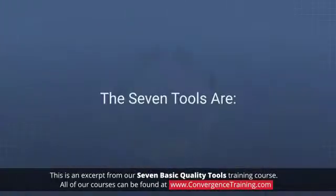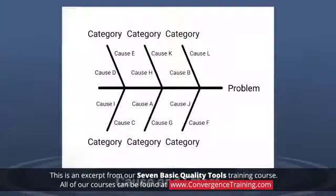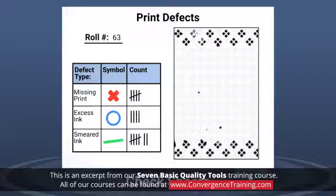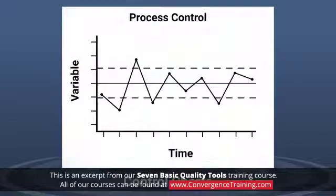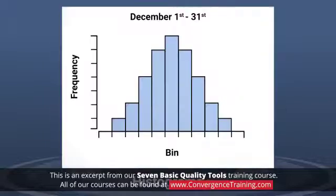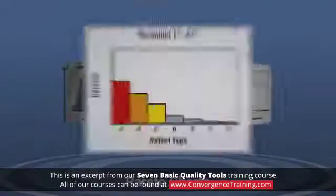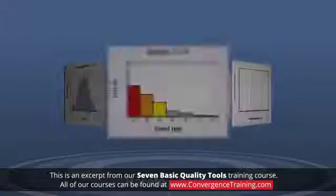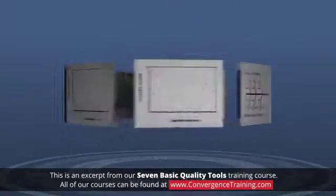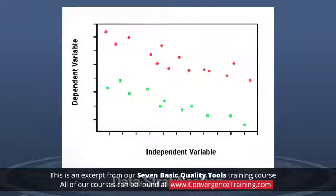The seven tools are: cause and effect or fishbone diagrams, check sheets, control charts, histograms, Pareto charts, scatter plots, and data stratification or classification.